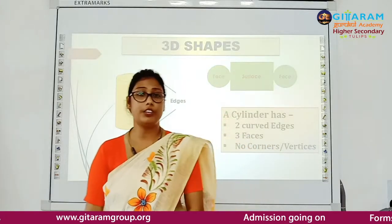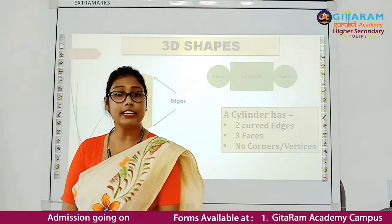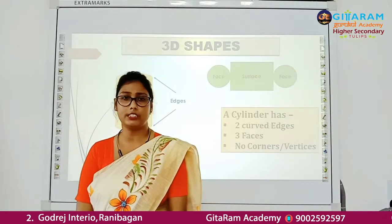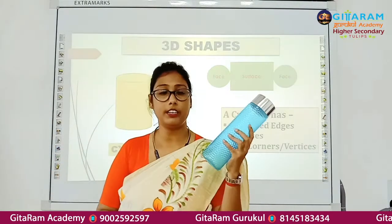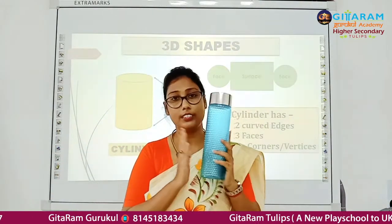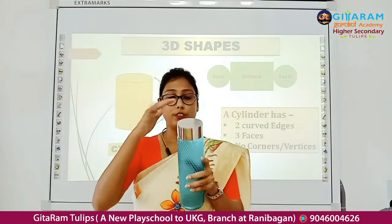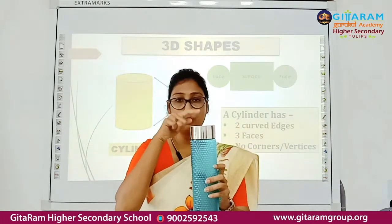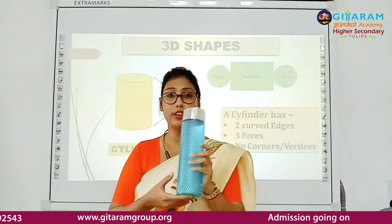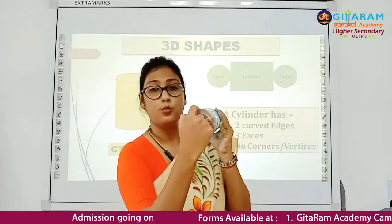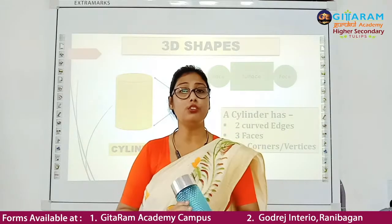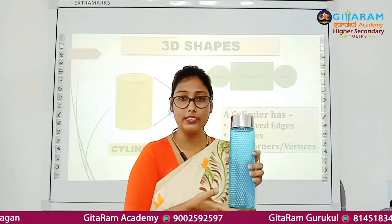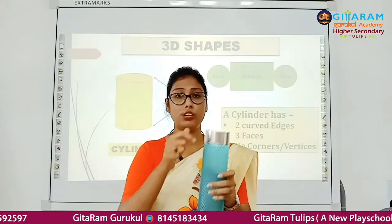Our next 3D shape is cylinder. A cylinder has 2 curved edges and 3 faces. It has no corners or vertices. This bottle looks like a cylinder. Let's count: 3 faces — 2 flat faces and 1 curved face: 1, 2, 3. And 2 curved edges: 1 and 2. So a cylinder has 3 faces — 2 flat and 1 curved — and 2 curved edges.